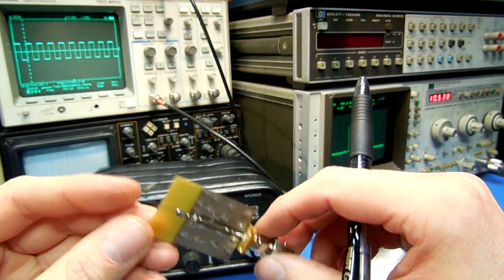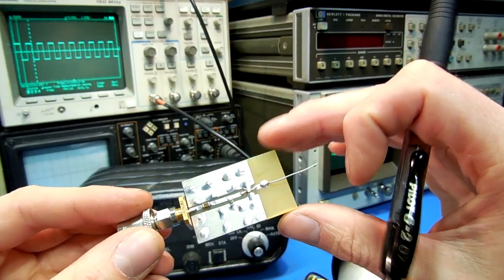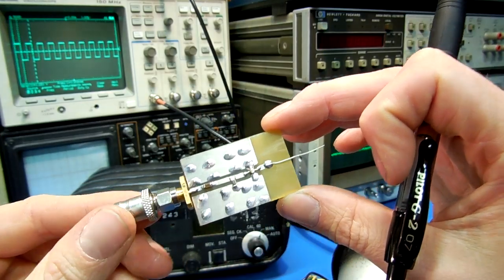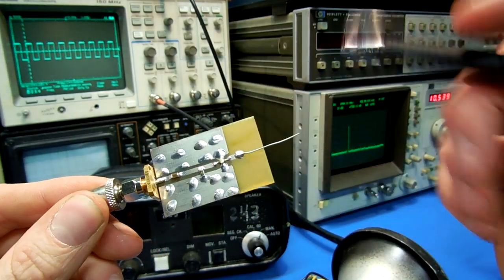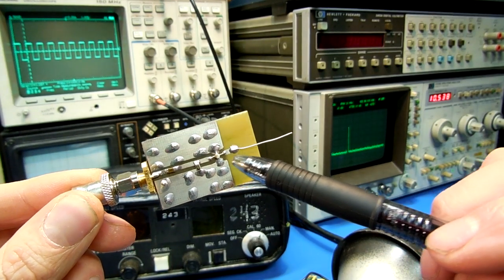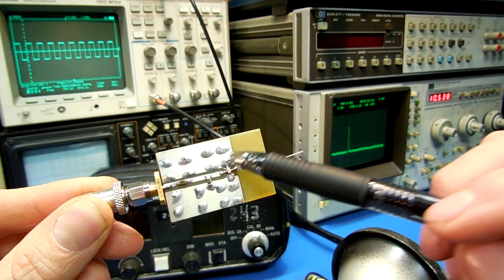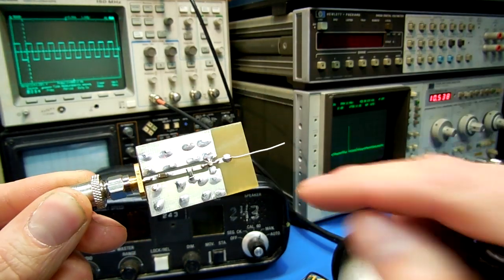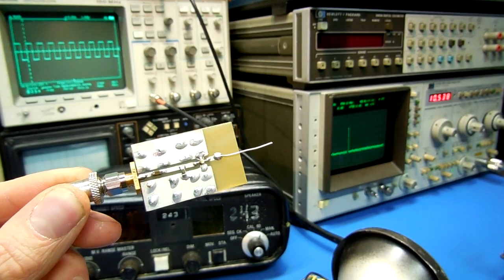Here's the device I'm using for experimenting. It's the Fujitsu FHX35LG right here. The brown dot is the gate. The two source leads are grounded. And on the drain is just a little piece of wire.